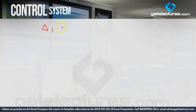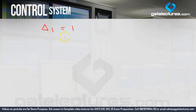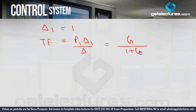Now what is the value of delta K? Delta 1 is the same as delta, but excluding the loop gains which are touching the first forward path. The first forward path touches the loop minus GH, so we exclude it. Therefore delta 1 becomes 1. So the transfer function is P1 times delta 1 upon delta, which gives G upon 1 plus GH.